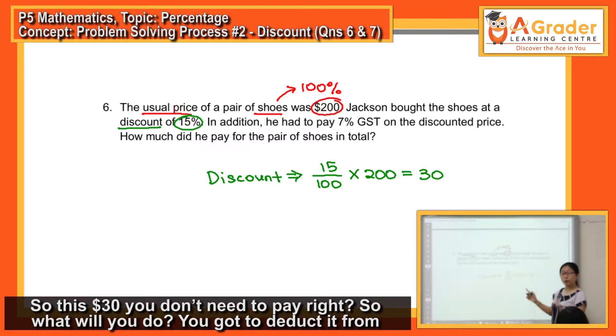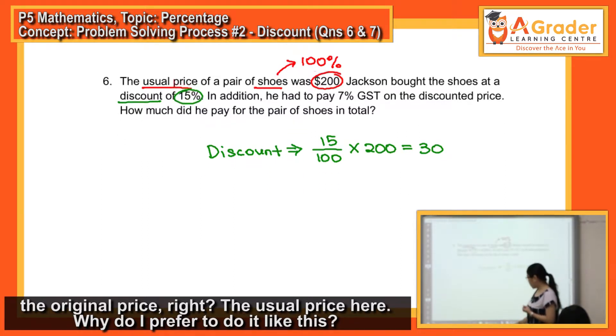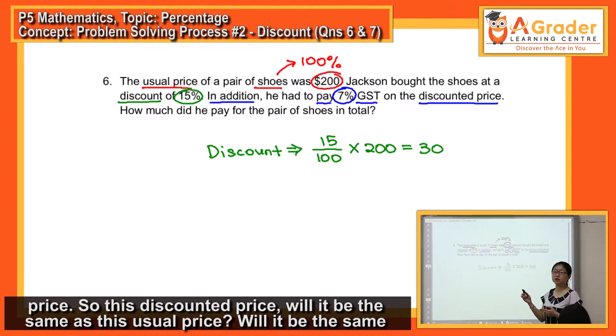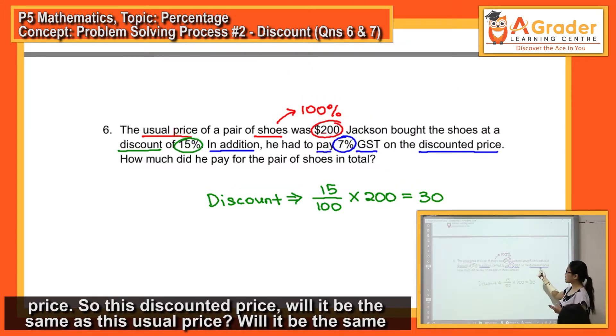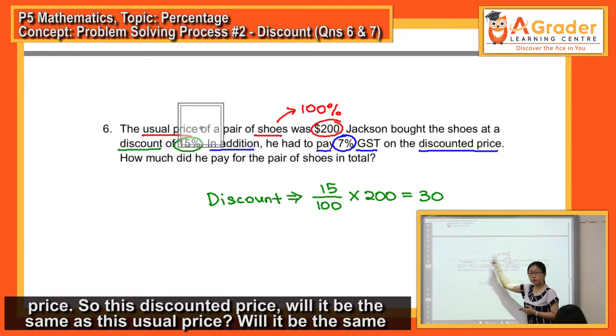So, this $30, you don't need to pay. So what will you do? You got to deduct it away from the original price, the usual price here. Why do I prefer to do it like this? Because if you look at the next line, in addition, he had to pay 7% GST on the discounted price. So, this discounted price, will it be the same as this usual price? Will it be the same thing? No.